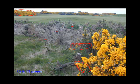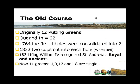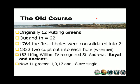This is an example of a double green — the 13th and 15th green. There's one flag and there's the other, and the red flag is for the return. In Scotland, a nautical theme often goes with the course. There were originally 12 putting greens. In 1764, the first four holes were consolidated into two. In 1832, two cups were cut into each hole. Then in 1834, King William IV recognized St. Andrews as Royal and Ancient, and it is called that to this day.